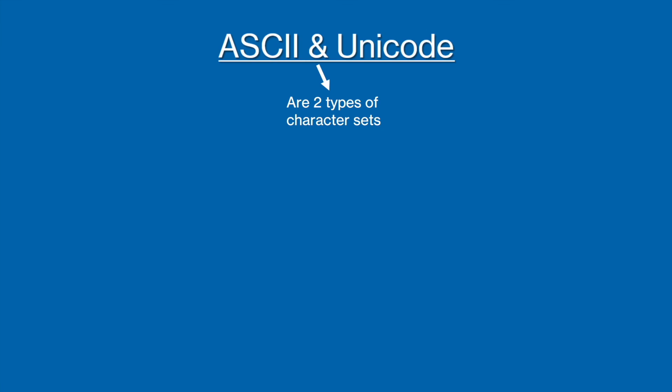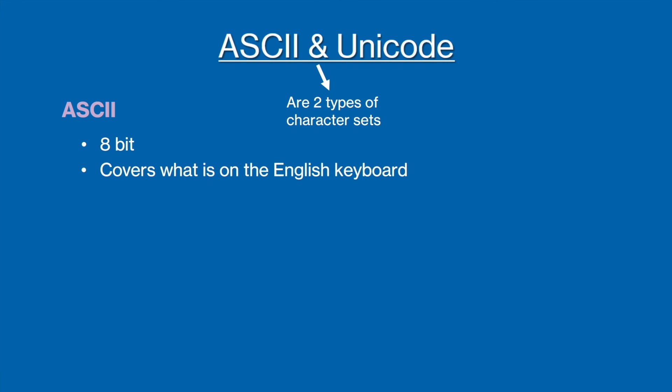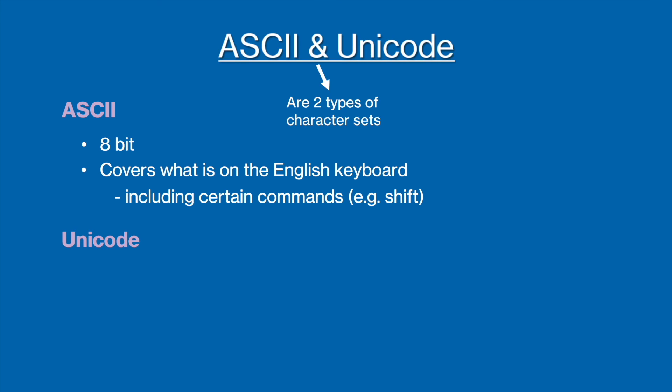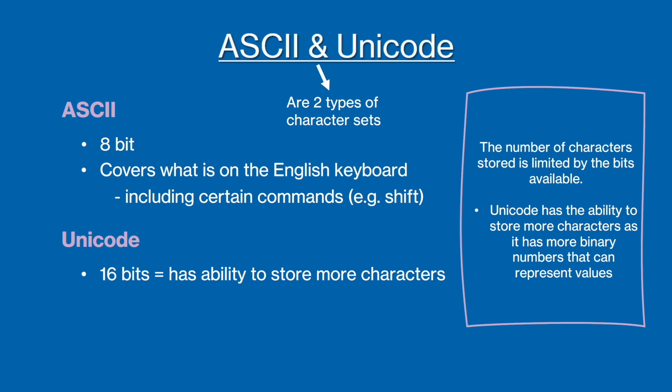There are two common character sets that you need to know. The first is called ASCII. It's an 8-bit character set that covers all the characters on your keyboard, including certain commands like the shift key, as well as the typical numbers, letters, and punctuation. The second character set is Unicode, and this is a 16-bit character set, which means that it has the ability to store more characters, as each bit increases the capacity to store more binary numbers that can represent different characters. This is why Unicode can cover any character in any language, rather than being limited to the English keyboard like ASCII.